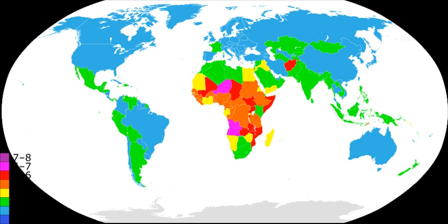In the twentieth century, population planning proponents have drawn from the insights of Thomas Malthus, a British clergyman and economist who published An Essay on the Principle of Population in 1798. Malthus argued that '...population, when unchecked, increases in a geometrical ratio. Subsistence increases only in an arithmetical ratio.'